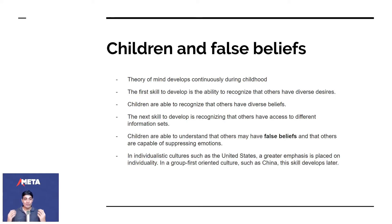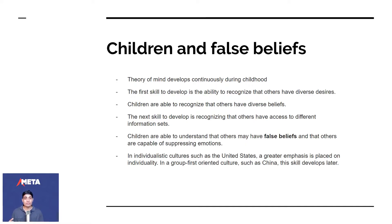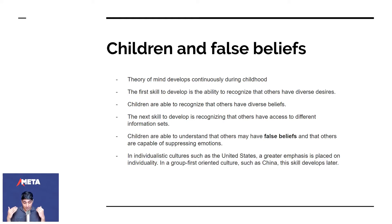Until the age of four, children don't understand that other people can be wrong. That's why your parents probably warned you about somebody giving you candy, especially when you were young, because you don't understand that those can be negative or false beliefs. And that others are capable of suppressing emotions — another person could be really happy but pretend to be normal.